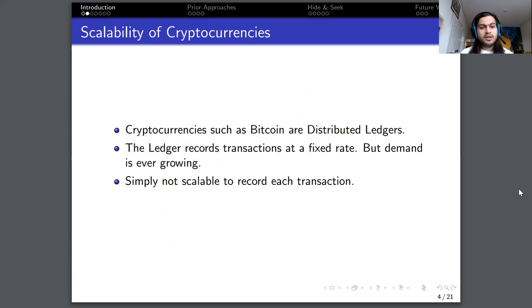This problem comes from the simple fact that cryptocurrencies such as Bitcoin are ultimately distributed ledgers, and these ledgers grow at a fixed rate. So you can record transactions in them, but they can only grow at a constant rate. However, the demand for transactions that wish to be included in the ledger is forever growing, and therefore it is simply not scalable to record each transaction, and we need another solution.